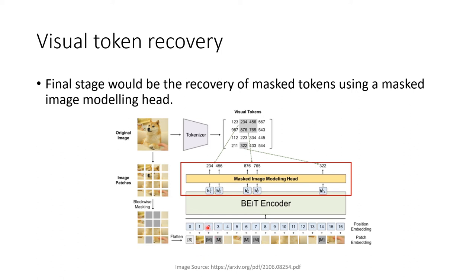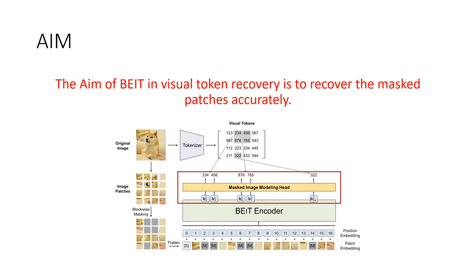The final stage is to ask our BEIT to predict the visual token corresponding to the masked image. This is done by having a masked image modeling head appended to our BEIT. The aim of BEIT in visual token recovery is to recover the masked patches as accurately as possible. For example, a patch corresponds to a particular output token — say 234 — and these two must match. That is how we pre-train our BEIT.